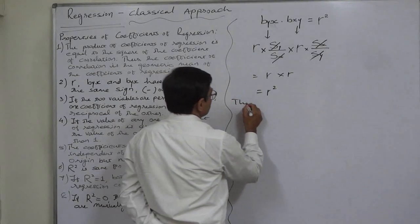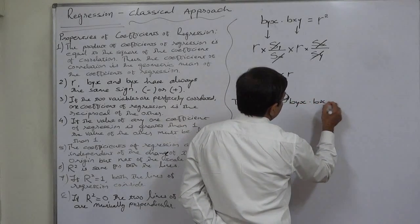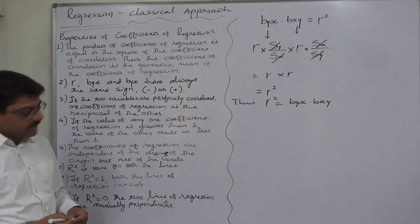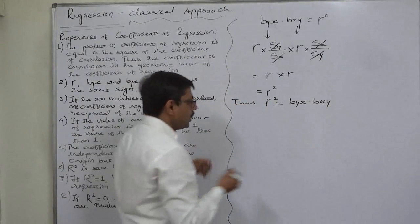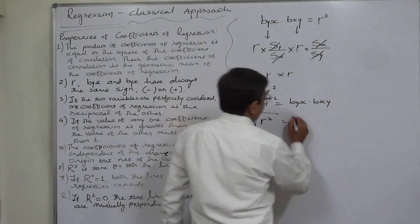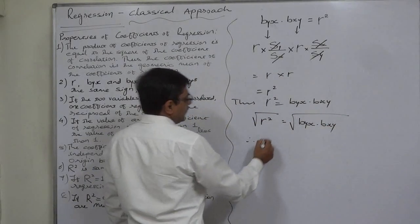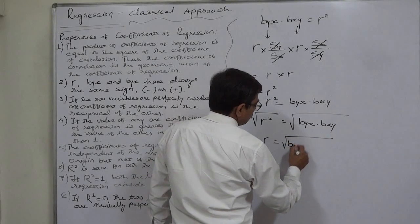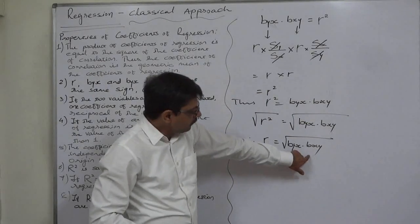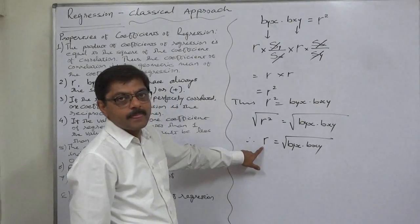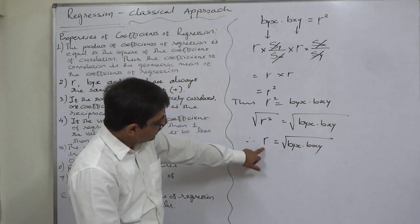So ultimately there is r × r, that means r². We can say that b_yx × b_xy equals the squared value of the coefficient of correlation. If we want to find the coefficient of correlation from this formula, we take the square root on both sides: r equals the square root of the product of the two coefficients of regression. That square root means this is the geometric mean of these two factors.